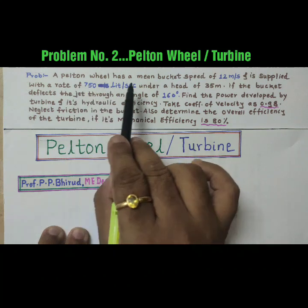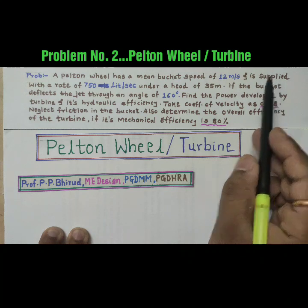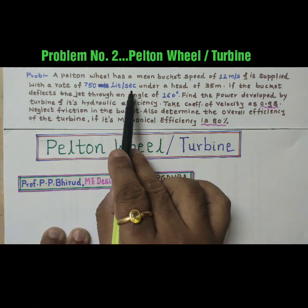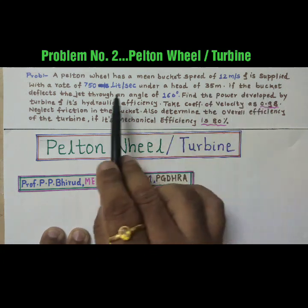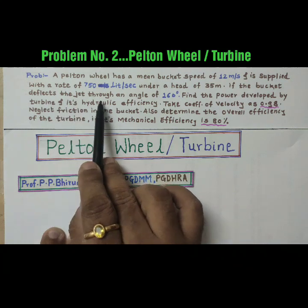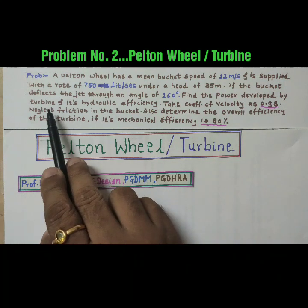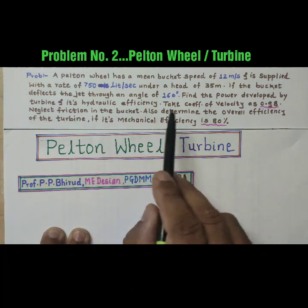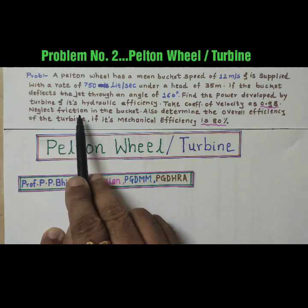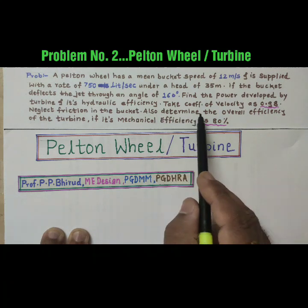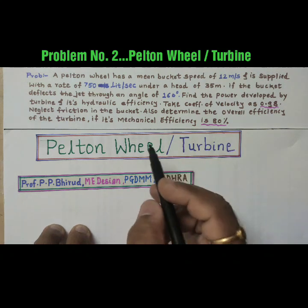A Pelton wheel has a mean bucket speed of 12 meter per second and is supplied with a rate of 750 liter per second under a head of 35 meter. If the bucket deflects the jet through the angle 160 degree, find the power developed by the turbine and its hydraulic efficiency. Here take coefficient of velocity is 0.98. Neglect the friction in the bucket.